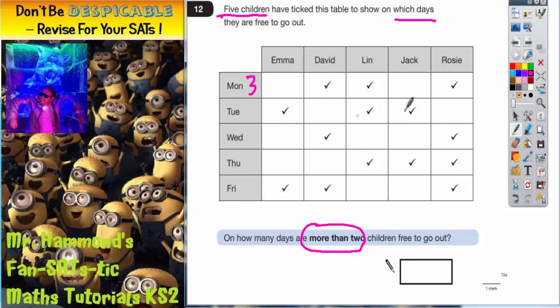On Tuesday there is one, two, three ticks. Wednesday only two children. On Thursday there is one, two, three children free to go out. And on Friday there is one, two, three children free to go out again.